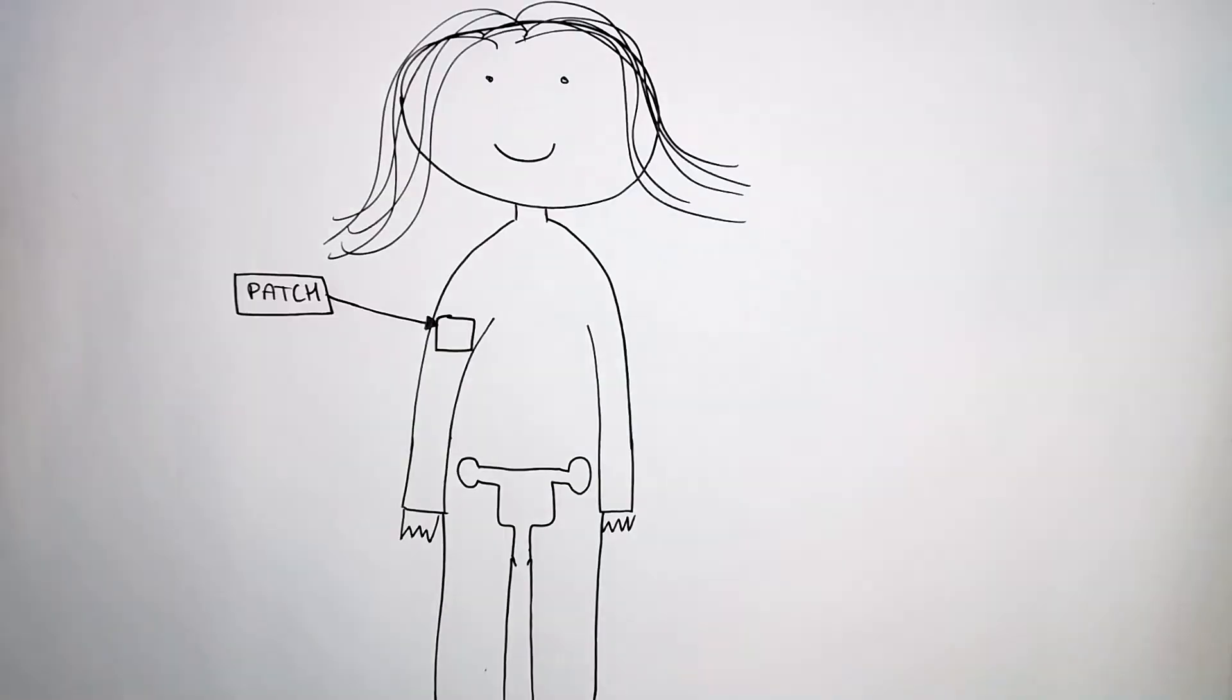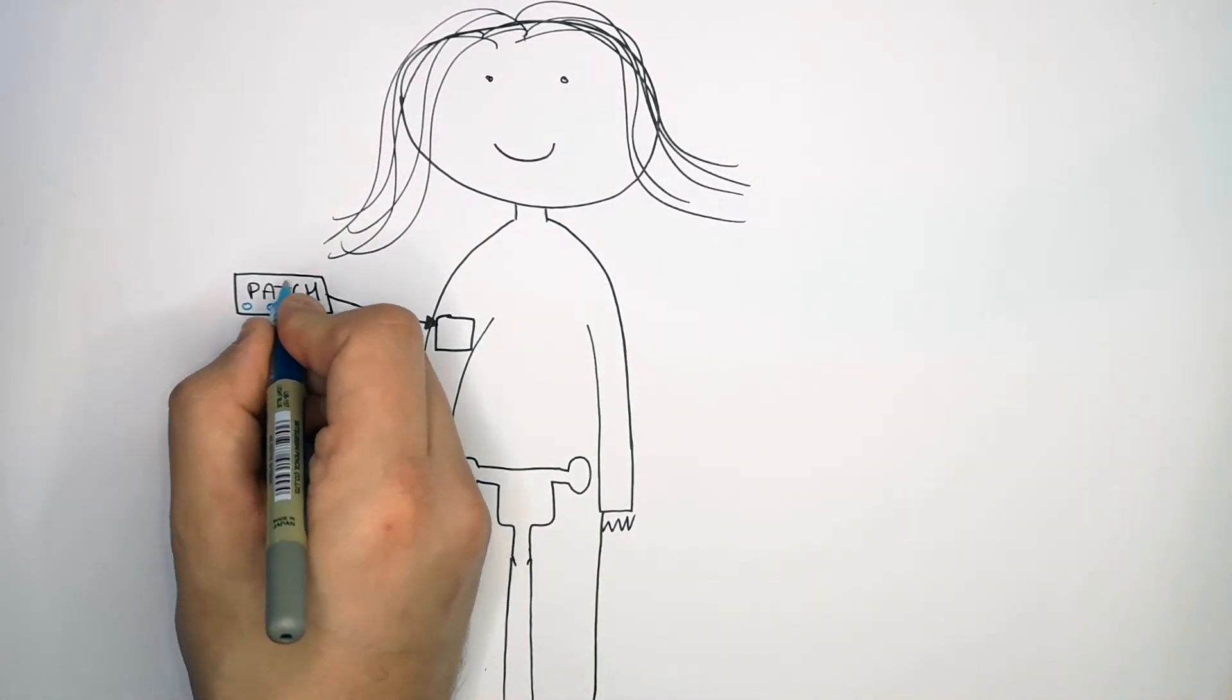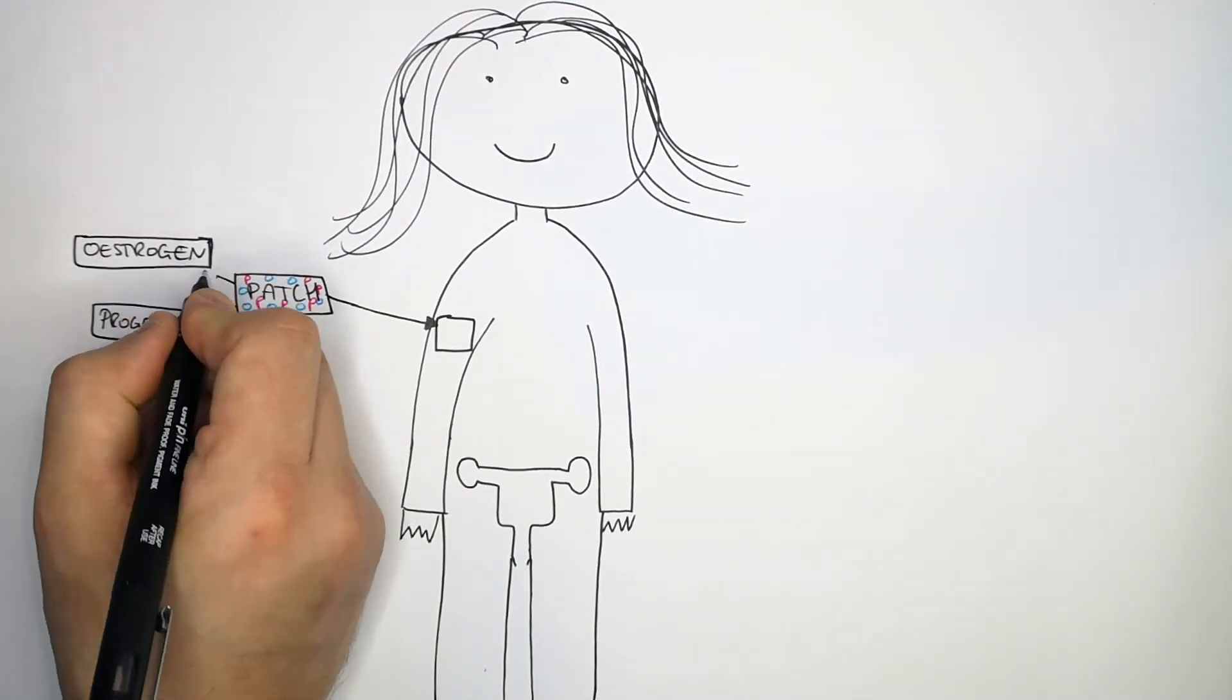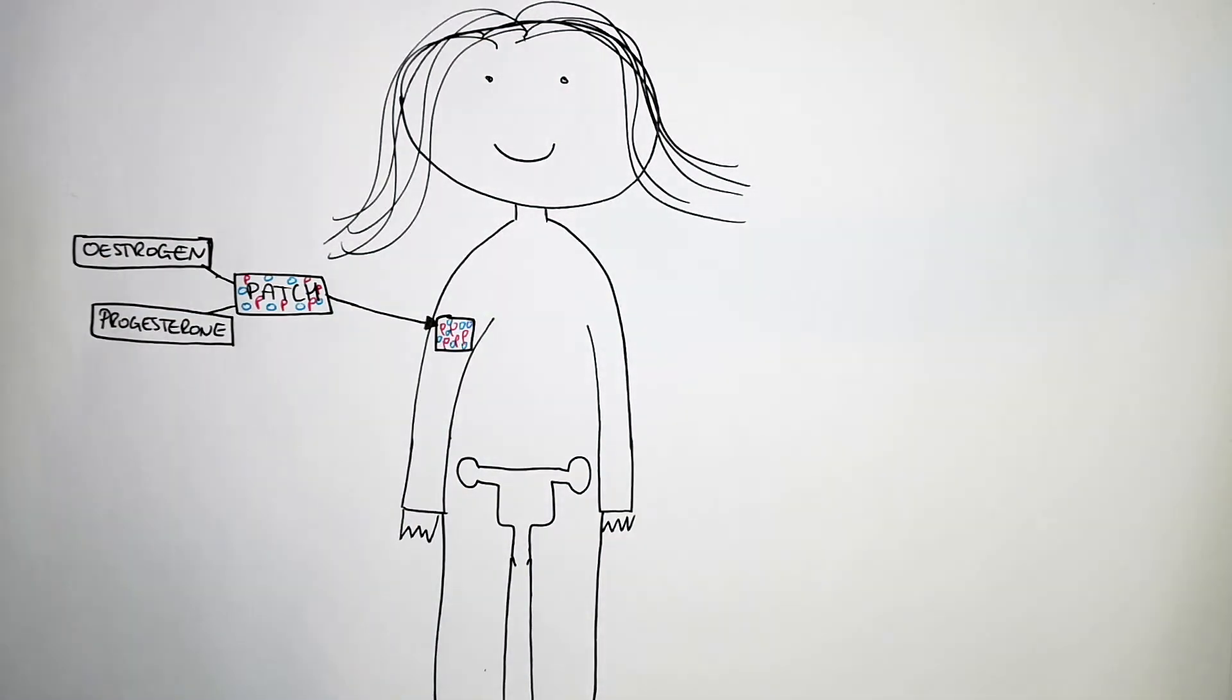The hormonal patch is another form of contraception. It contains oestrogen and progesterone which works in the same way as the pill does.